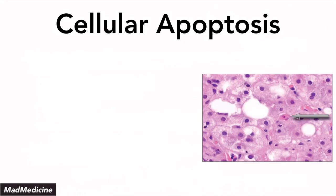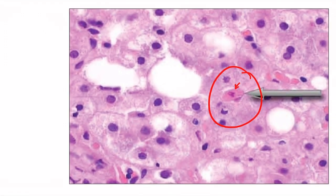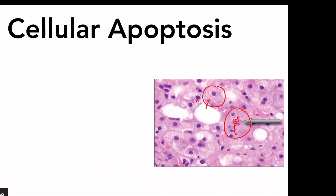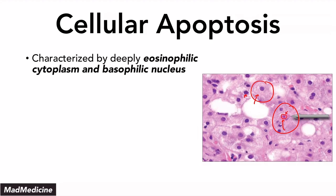This is what cellular apoptosis looks like at the histology slide level. You see a cell that is very pink — its nucleus does not seem as distinct as neighboring cells. The cytoplasm is very pink, and the nucleus is a little degraded and less dense. This is a hallmark appearance of a cell undergoing apoptosis. Apoptotic cells are characterized by deeply eosinophilic cytoplasms and basophilic nuclei — high yield to remember.